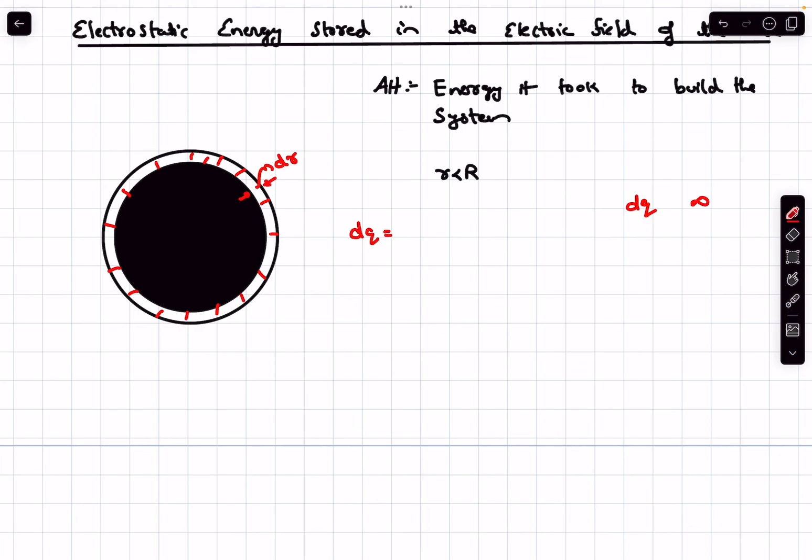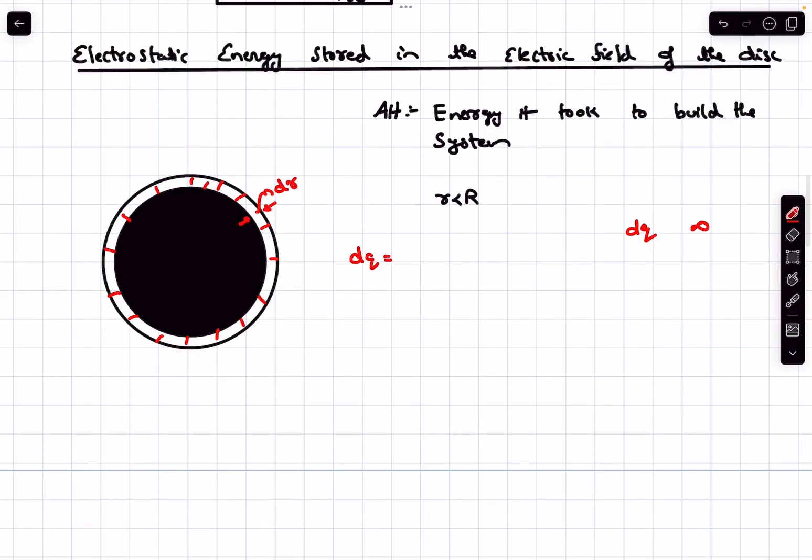The dq charge we spread out among an area of 2πr dr, so it is going to be σ times 2πr dr.